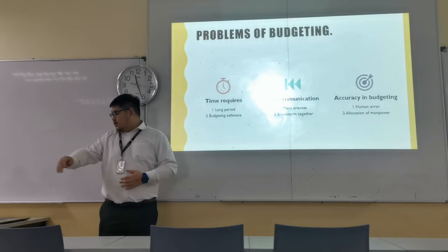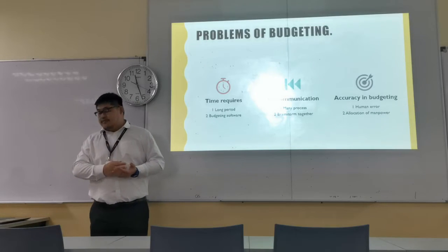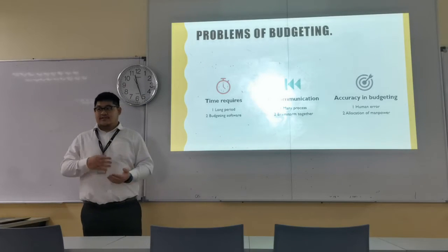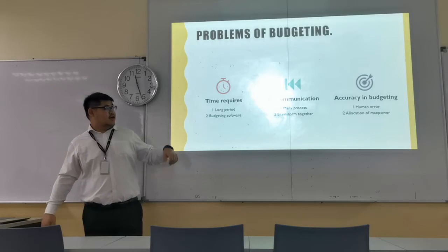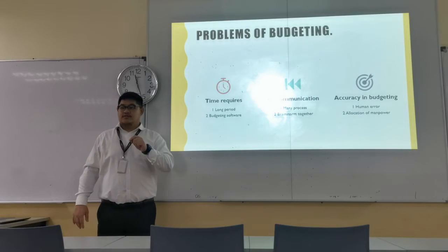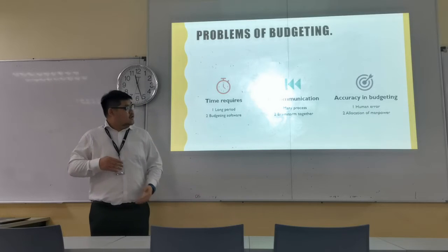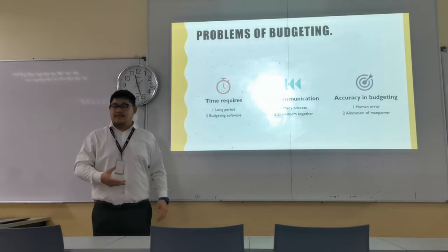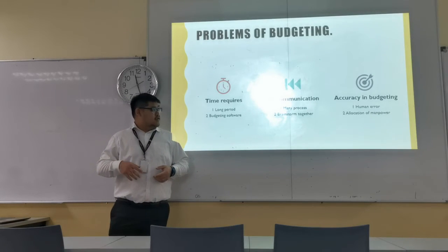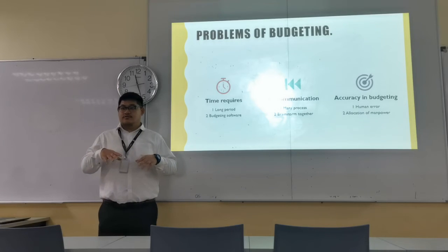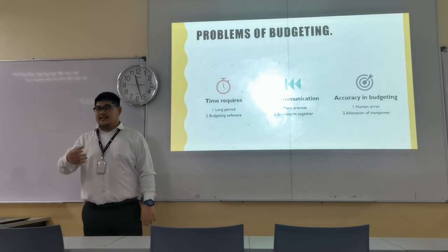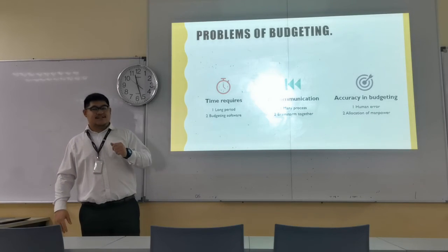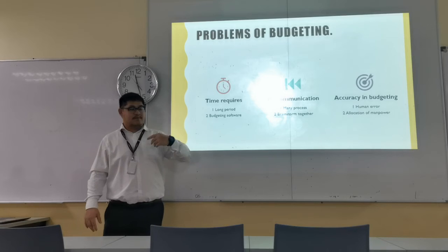The last problem is accuracy in budgeting. Human error always happens, so the accuracy of budgeting is never 100% correct. However, if management properly allocates manpower, having different people responsible for different parts of the budgeting process means the budgeting will be more accurate than having each person do everything alone.